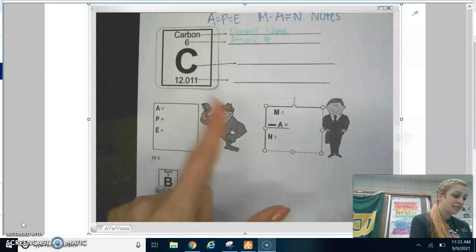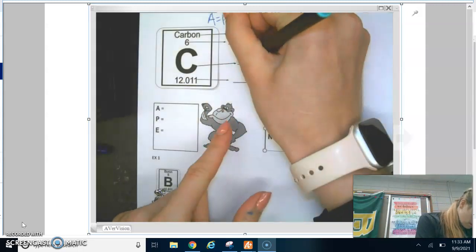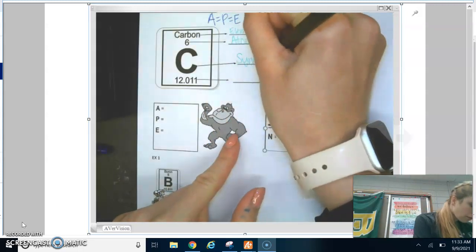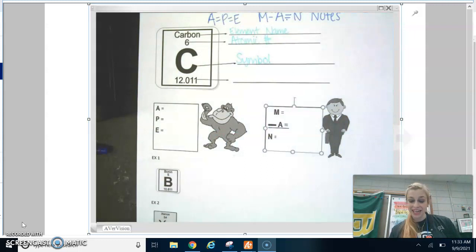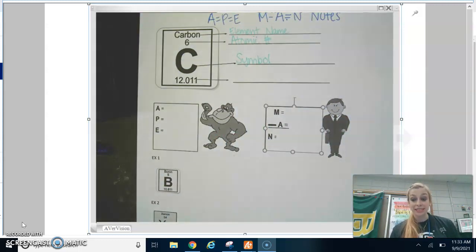The C is the symbol. When you look at your periodic table, what do you notice about the symbols for every element? You might notice some of them have one letter, some of them have two letters. But look at that first letter. It's always capitalized. The first letter is always capitalized. The second letter is always lowercase. And it's really important that you write it that way.